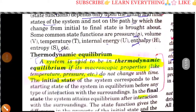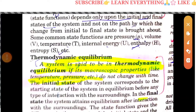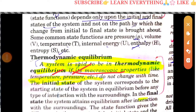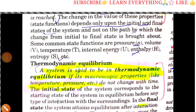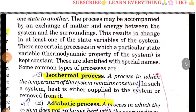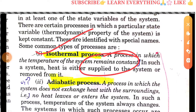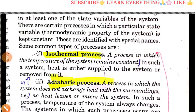A system is said to be in thermodynamic equilibrium if its macroscopic properties like temperature and pressure do not change with time. Next, the types of processes. An isothermal process is one in which the temperature remains constant throughout — no temperature change occurs during the process.